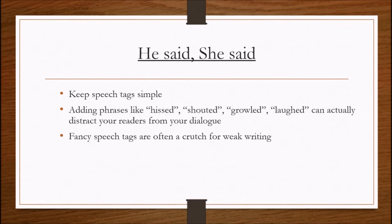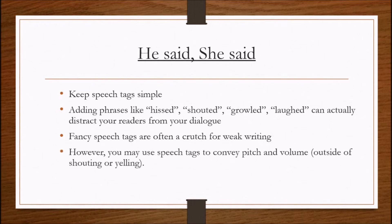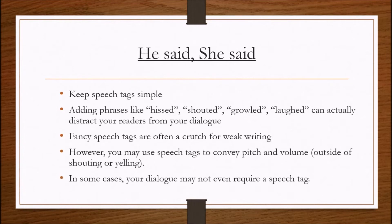Word choice should indicate the character's emotion or mood. Punctuation can be used to bring your dialogue to life. There is no need to write 'he shouted' if you just include an exclamation mark at the end of your sentence. However, you may use speech tags to convey pitch and volume outside of shouting or yelling — whispering cannot be conveyed with punctuation or word choice. In some cases, your dialogue may not even require a speech tag, especially when there are only two characters speaking. Add a speech tag after about three to four lines to prevent your readers from getting lost.